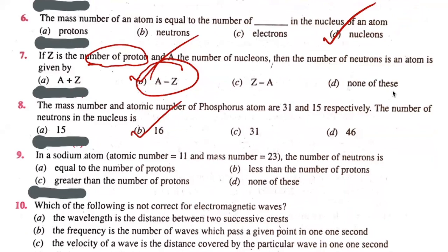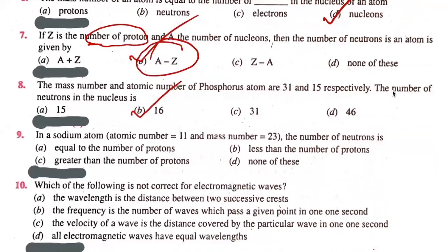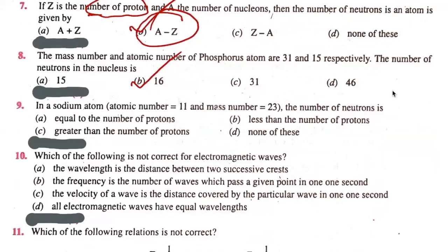Ninth question. In sodium atom, atomic number 11, mass number 23, the number of neutrons is equal to, less than, greater than, or none compared to the number of protons? The answer is: greater than the number of protons. Option C is the correct answer.